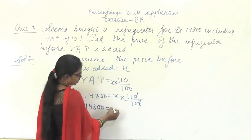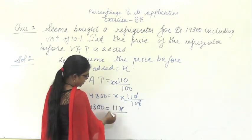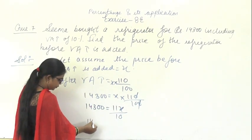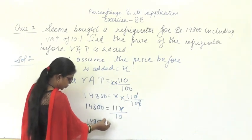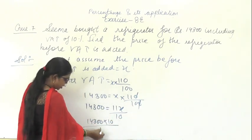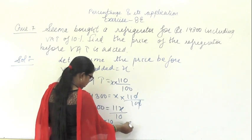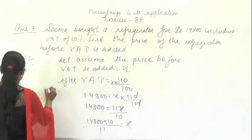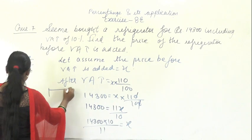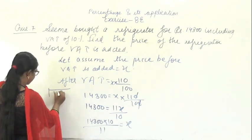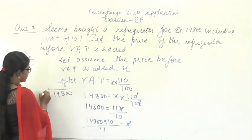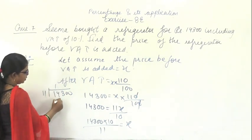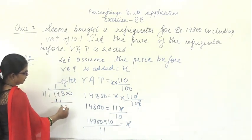So 14,300 = 11X/10. From here X = 14,300 × 10/11. That gives 143,000/11 = 13,000. So X = 13,000 rupees.